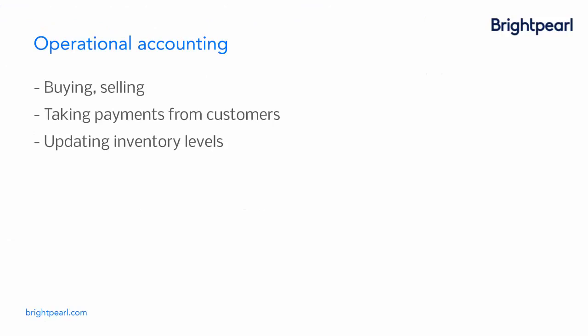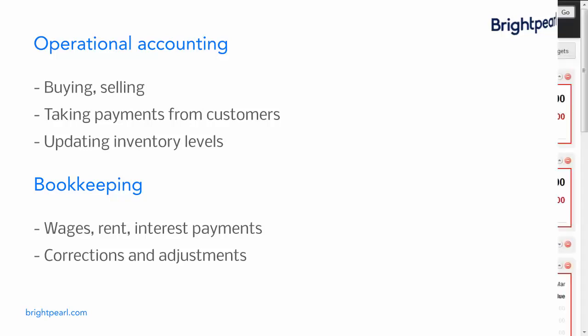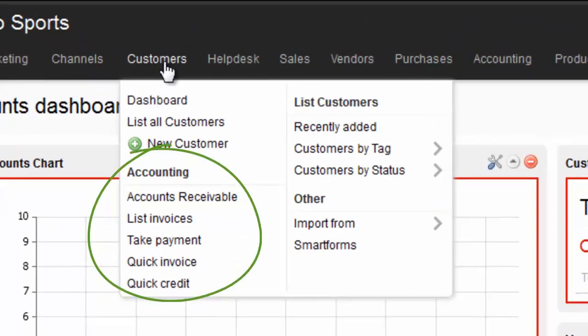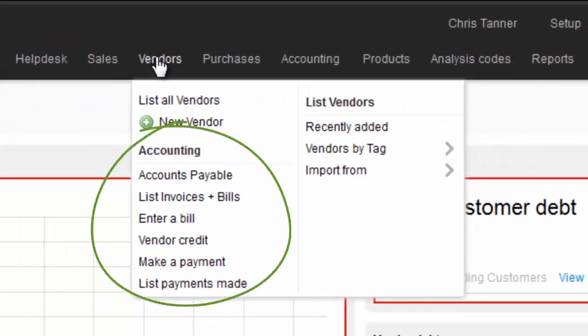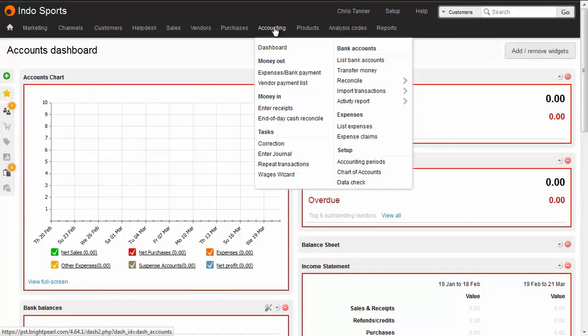Because Brightpearl has a full accounting system built in, a lot of processes that would otherwise be done by your bookkeeper can be automated. We describe two types of financial processes. The first is operational accounting, which is recording the financial information related to your day-to-day process of buying, selling, and updating inventory levels — Brightpearl does most of this for you. The second is bookkeeping, which is manually recording information not directly related to day-to-day operations, such as wages, rent, interest payments, and corrections. Brightpearl makes operational accounting features available under the customer and supplier menus, while bookkeeping tasks are under the accounting menu. Using permissions, you can give more control to your operational staff while reserving bookkeeping for your qualified bookkeeper.